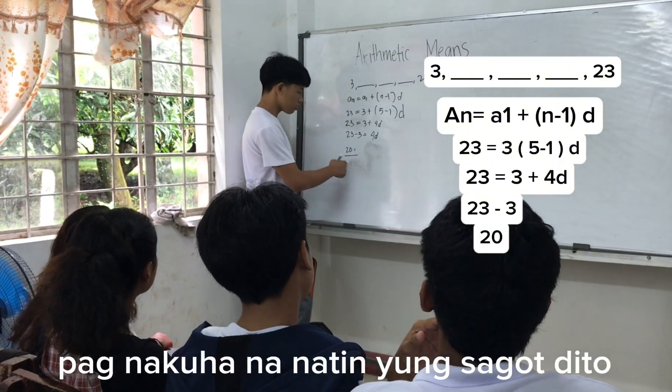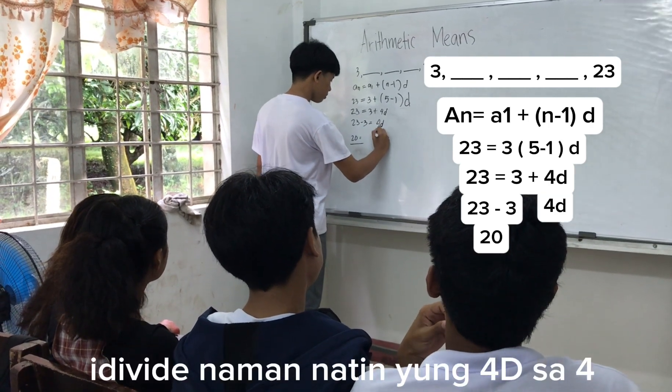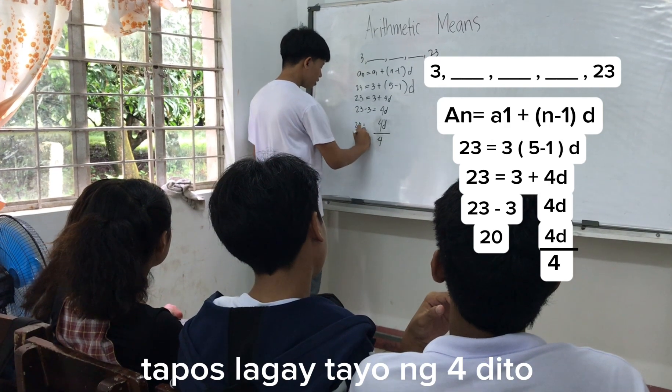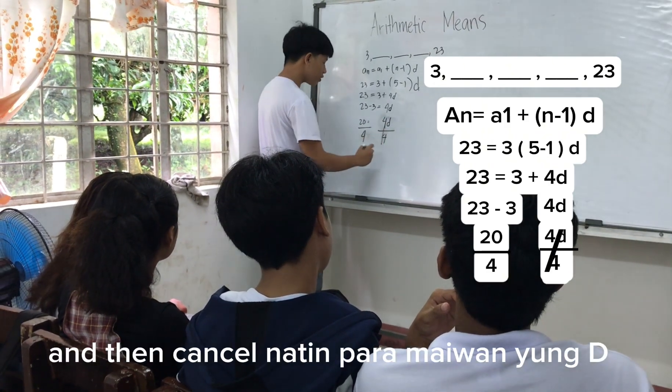Uwan na natin yung sabi ko. Dibide naman natin yung 4 sa 4. Dibide naman natin yung 4. So, dibide tayo yung 4 dito, and then i-cassin natin yung 2. Para makikiging iwan na lang yung 2.